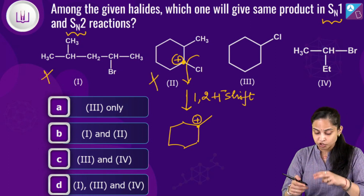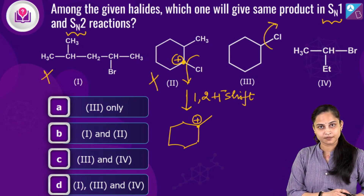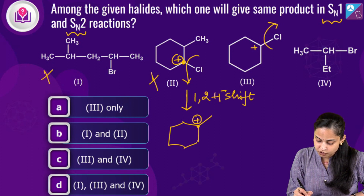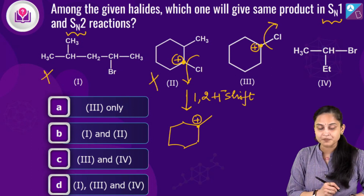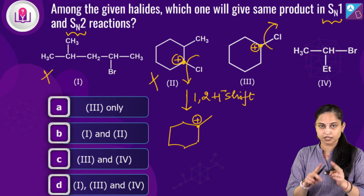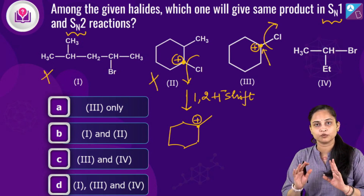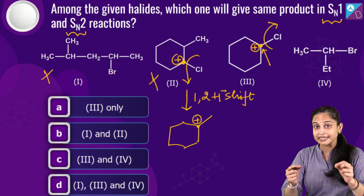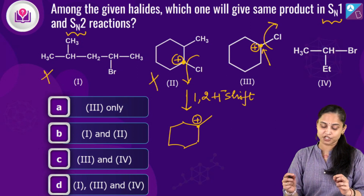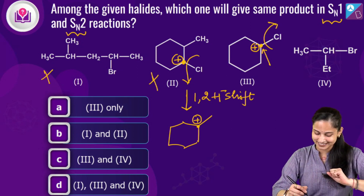For the third option, the leaving group cleaves out forming a carbocation at a specific carbon atom. In both SN1 and SN2 reactions, the nucleophile attacks at that same carbon atom only. This means we get the same product in both SN1 and SN2 for this compound, so option 3 is still in the race.